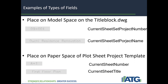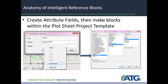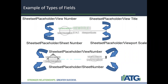Place on paper space in a plot sheet project template fields like your current sheet number or your current sheet title. For the anatomy of intelligent reference blocks: you can create attribute fields, then make blocks within the plot sheet project template. Just insert a field and create it in the sheet set placeholder. Examples include: sheet set placeholder view number, sheet set placeholder view title, sheet set placeholder sheet number, and sheet set placeholder viewport scale.